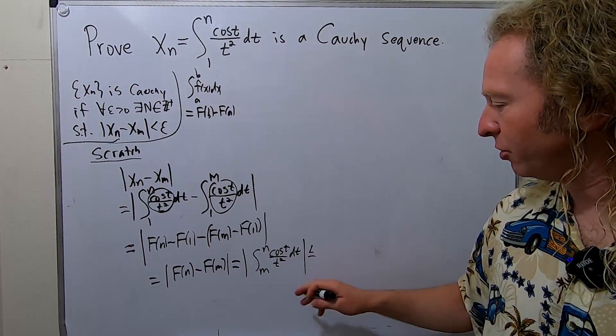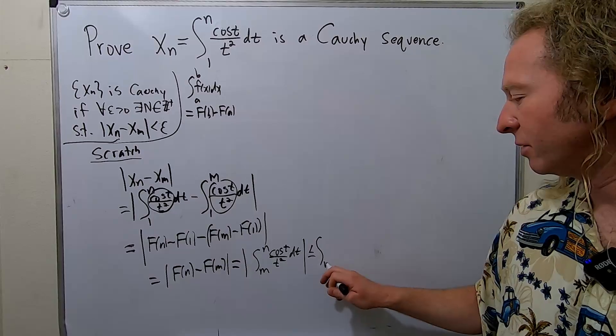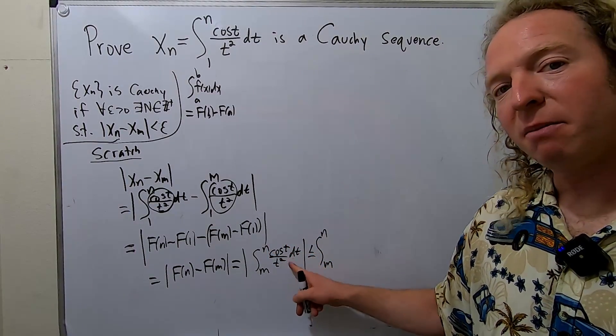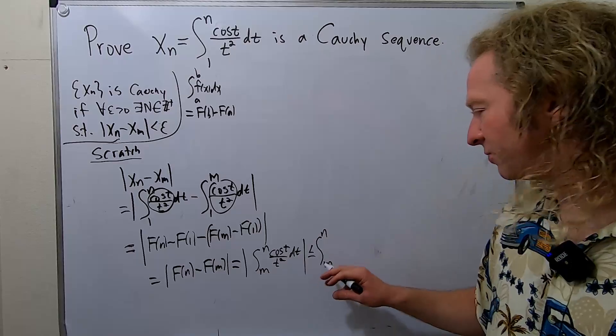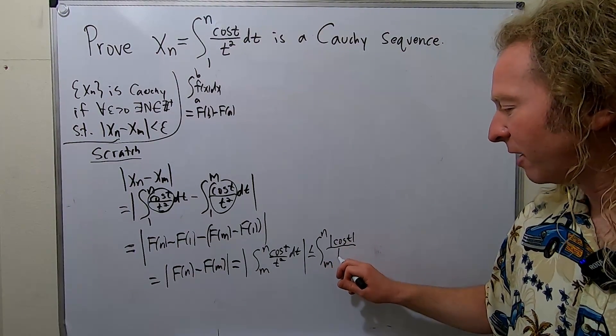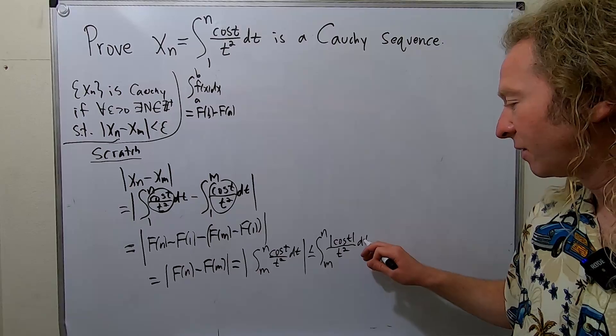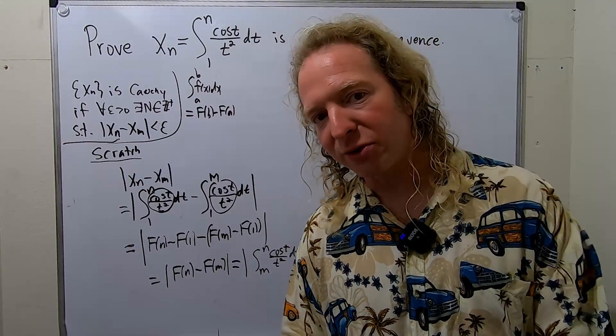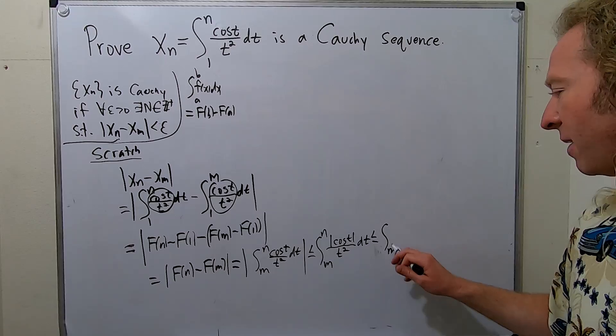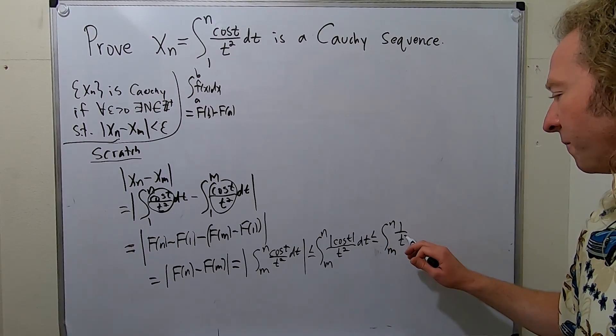This is less than or equal to, you can put the absolute value inside, so this is m to n, and then it's the absolute value of this whole piece here. But the t^2 is already positive, so it'll just be the absolute value of cos(t) over the absolute value of t^2, but we can drop it. The absolute value of cos(t) is less than or equal to one, so this is less than or equal to, this is m to n, 1 over t^2, dt.